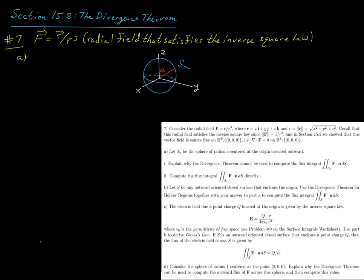For question 7, consider the radial field F, which is the position vector r — that is xi + yj + zk — divided by its magnitude cubed, where scalar r is the square root of x² + y² + z². Recall that this radial field satisfies the inverse square law: if you take the magnitude of this vector, you get 1/r². In section 15.5, we show that this vector field is source-free on all of ℝ³ excluding the origin, which is the domain of this vector field. In other words, the divergence of the vector field equals 0 on its domain.